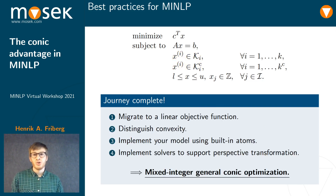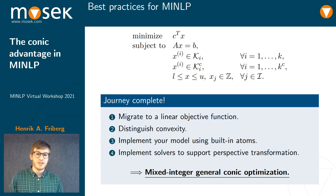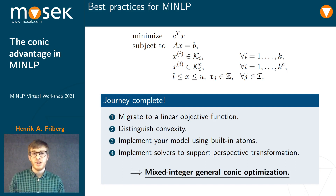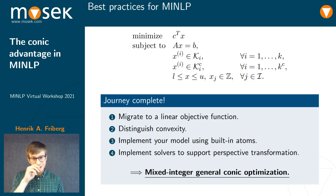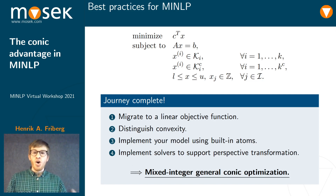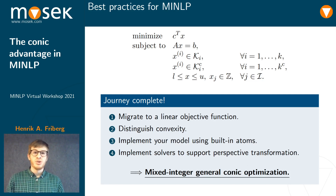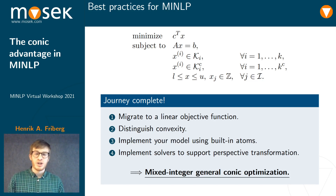And now our journey is complete. This is a mixed-integer general conic optimization model. All we needed to do was migrate to a linear objective function, distinguish convexity, implement the model using built-in atoms, and implement solvers to support the perspective transformation. All of which gave us a computational advantage, and now you can enjoy the power of Lagrangian duality theory for the convex subset of your problem.